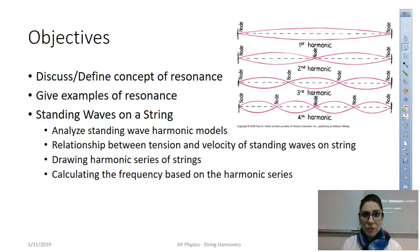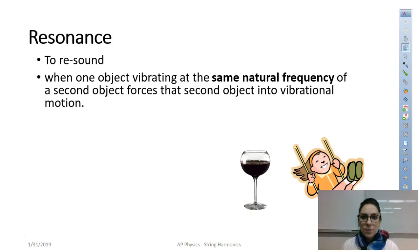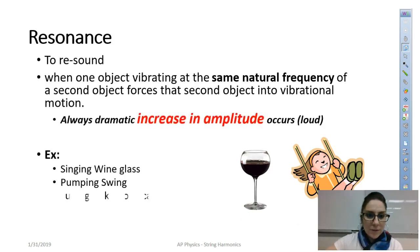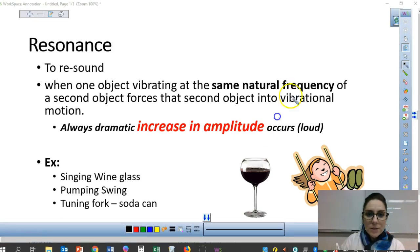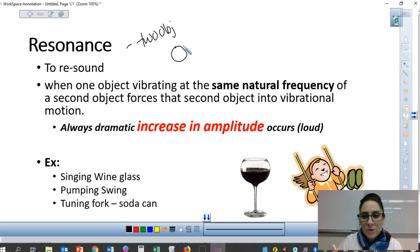So first we're going to start with the definition of resonance. Resonance in its most simple way means to 're-sound' — that's kind of what it means. For resonance you actually need two objects. Let me get my pen out so I can draw some pictures. So it turns out for resonance you actually need two objects.